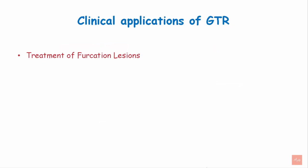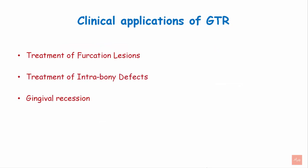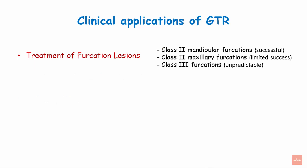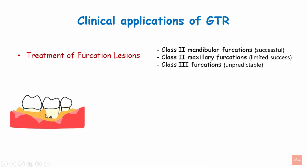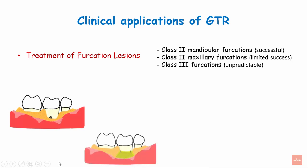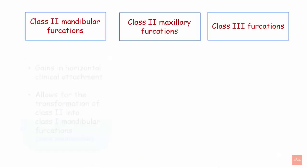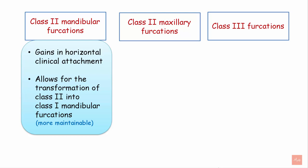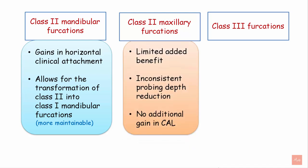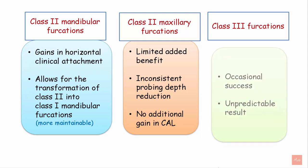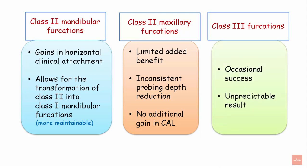The clinical applications of GTR are treatment of furcation lesions, intra-bony defects, and gingival recession. Class 2 mandibular and maxillary furcations can be treated. In this image you can see bone loss with exposure of the furcation area; after debridement, a GTR membrane is placed and sutured with a coronally positioned flap, and post-healing the furcation area is almost completely filled. In class 2 mandibular furcation it can give horizontal clinical attachment gain and allows transformation of a class 2 furcation into a maintainable class 1 furcation. In class 2 maxillary furcation, GTR is of limited value, providing inconsistent probing depth reduction and no additional clinical attachment gain. In class 3 furcation there is only occasional success and the results are unpredictable.